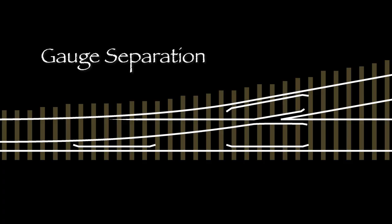A gauge separation is a specialized piece of track that transitions between dual gauge and two separate tracks. It looks similar to a turnout, but it has no moving parts. The narrow gauge always goes through one way and the standard gauge always goes through the other.